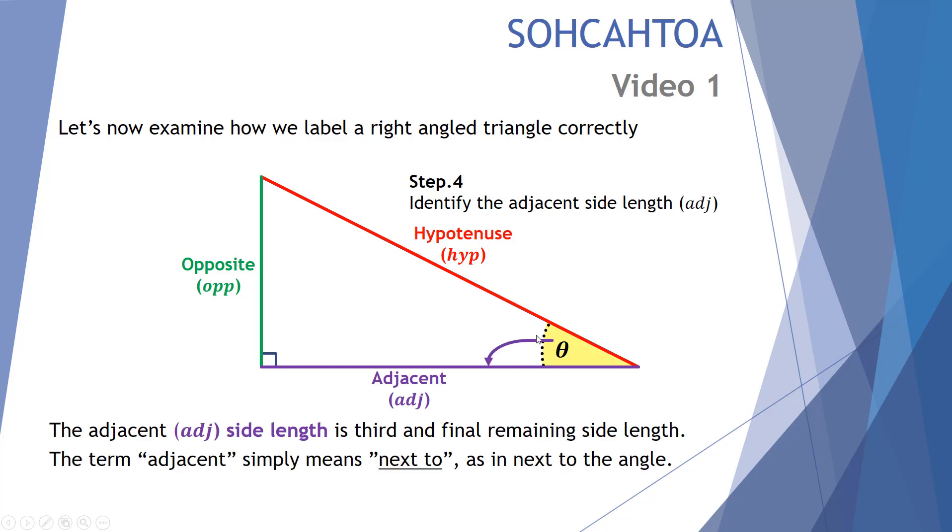Now the term adjacent simply means next to. So here we can see that is one of the two lines that make up the angle theta. The longest one is the hypotenuse, and this adjacent line is next to the angle theta.